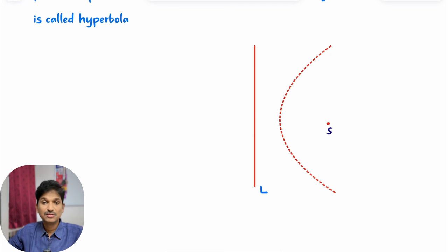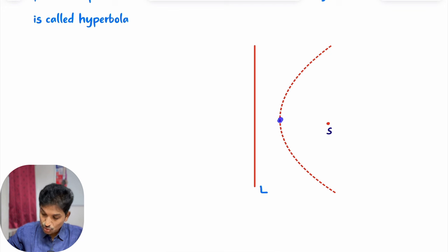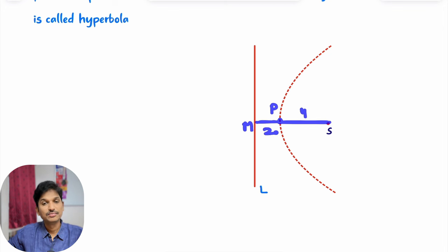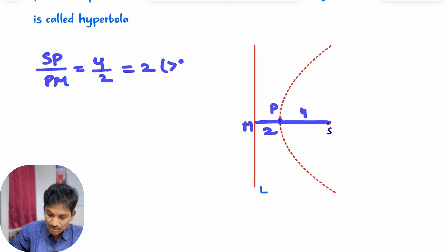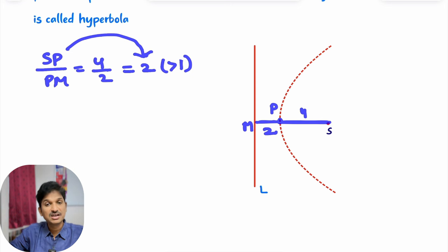Now to understand this more clearly I will take an example. Take point P here. SP is the distance to fixed point S, and PM is the distance to the fixed line. I will take this ratio as 4 to 2 — SP is 4 and PM is 2. So SP by PM is 4 by 2, which is 2. This is greater than 1. The ratio is constant and that constant is greater than 1.